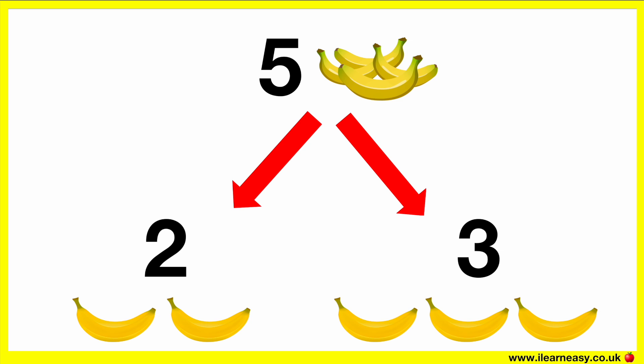So that's the difference between even and odd numbers. Just think that even numbers can be split into equal parts and odd numbers can't be split into equal parts.